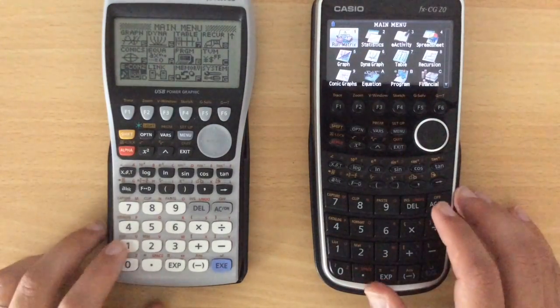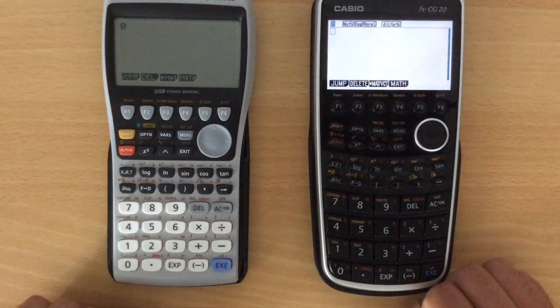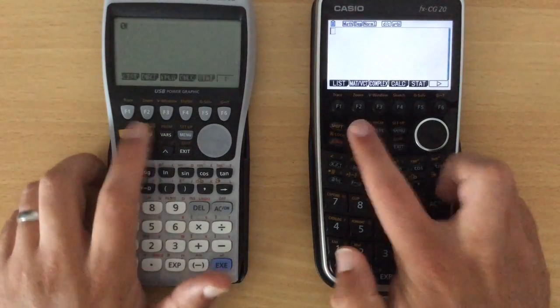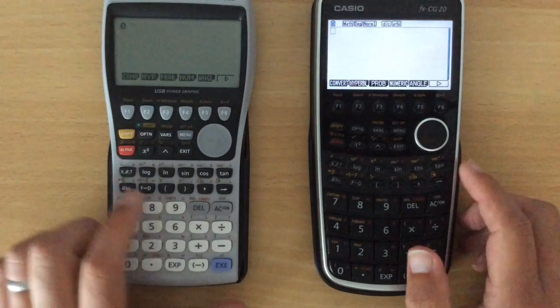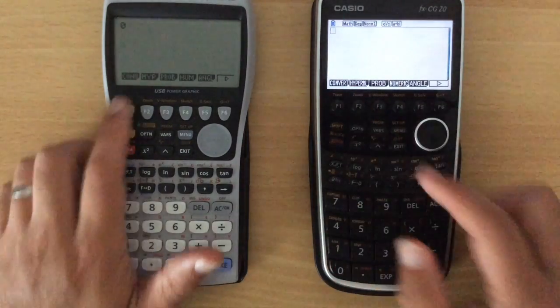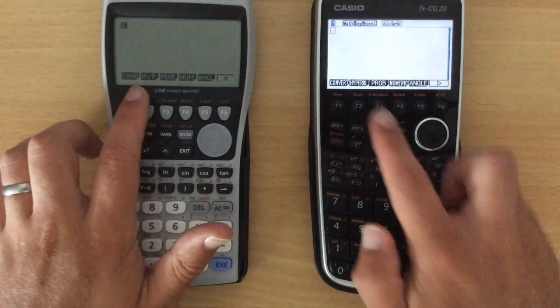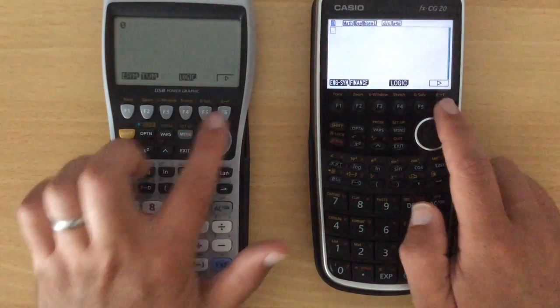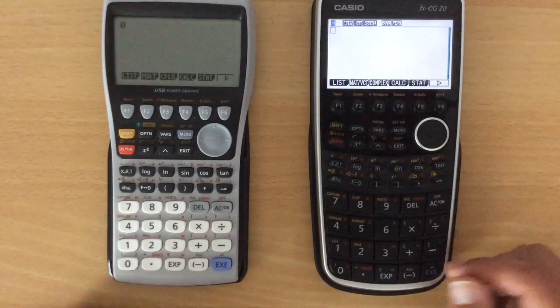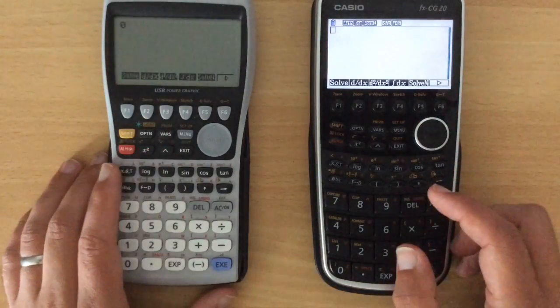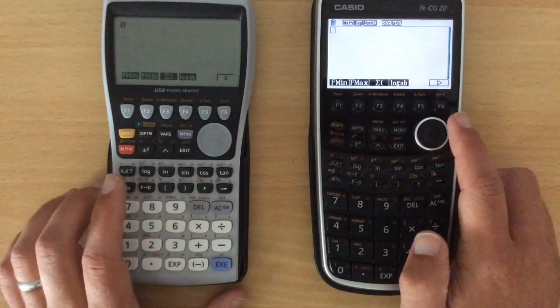When we come into our main calculation mode, again, essentially the same. We've got all the same options and things. We've got that conversion, some little conversion things in there as well, but just not quite as nicely presented, and essentially the same things appearing. So it's all sort of the same calculus.